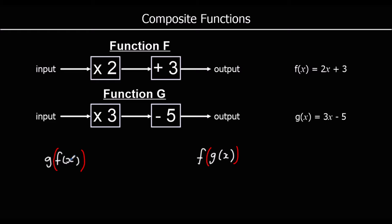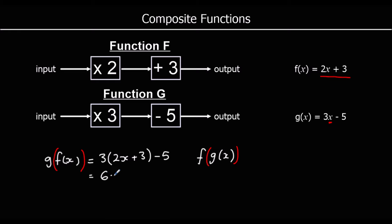So with gf of x, we're taking the entire f function, which is 2x plus 3, and putting it into g — changing the input for g to 2x plus 3. So we're going to have 3 times (2x plus 3) take away 5, which we expand to get 6x plus 9 minus 5, or 6x plus 4. Running f then g is the same as multiplying by 6 and then adding 4.